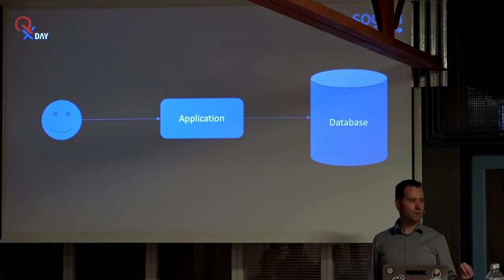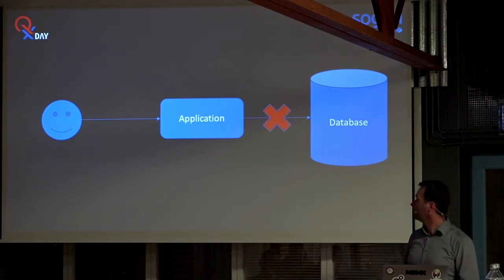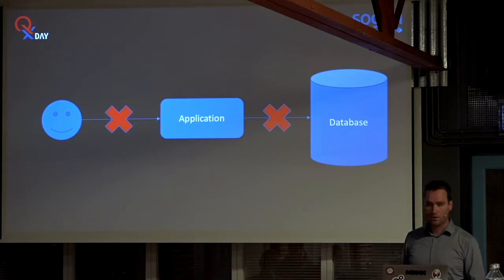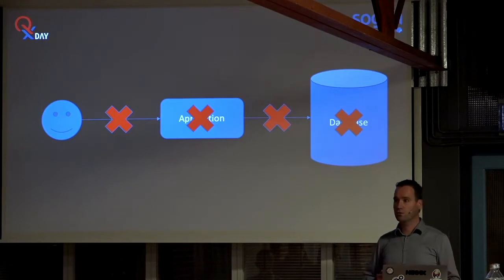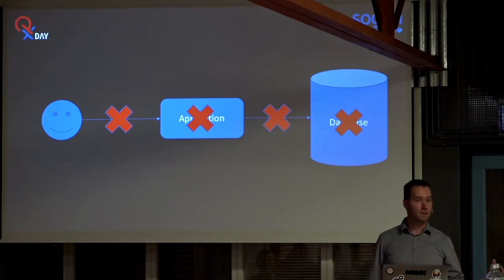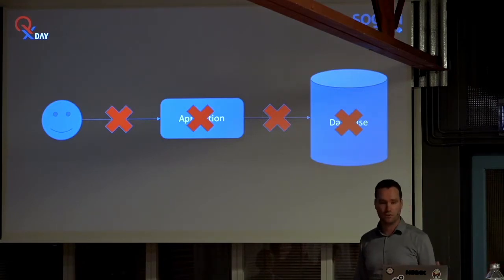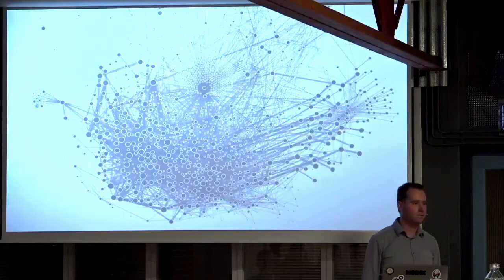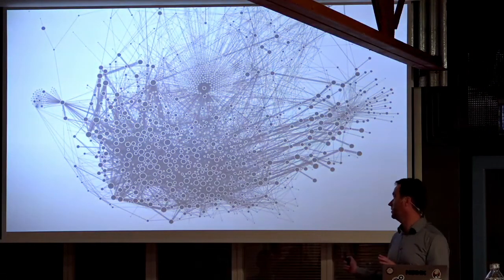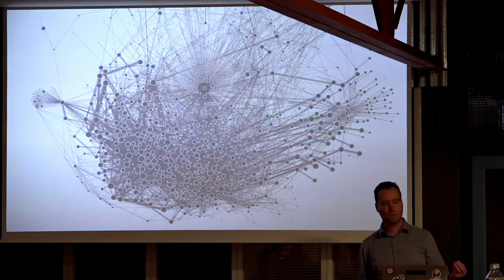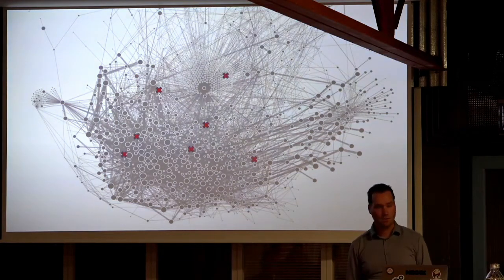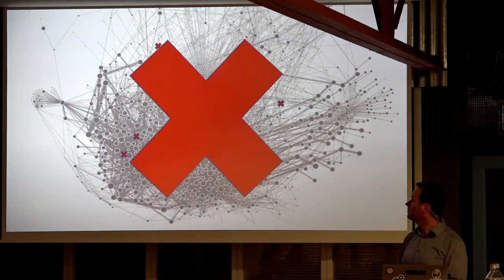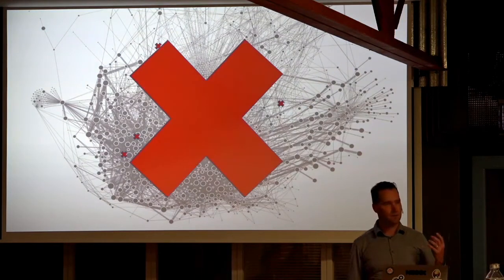But what if things go wrong? It happens. And in a simple user-application-database scenario it's pretty easy to spot — there's not much that can go wrong, and they're relatively easy to find. But what if your environment looks like a complex landscape? If things go wrong here, here, here, here — it can go wrong everywhere. And then, boom, it breaks down.